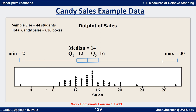Hopefully now you can create dot plots and box and whiskers plots and interpret them. This plot tells us: one-fourth of students sold between 2 and 12 boxes, one-fourth sold between 12 and 14, one-fourth sold between 14 and 16, and one-fourth sold between 16 and 30. The middle half sold somewhere between 12 and 16. Alright, I think you're ready to do some exercises on this for homework.